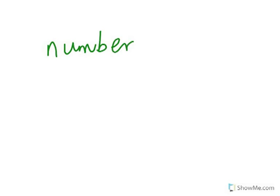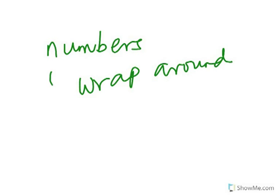Modulo is an arithmetic system whereby numbers wrap around themselves. Numbers tend to wrap around — they continue from the beginning. They reach a particular stage and they continue from the beginning.